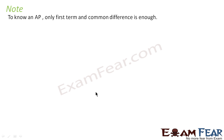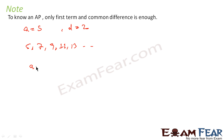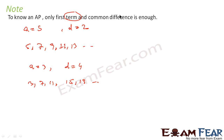An important note: to define an AP, only the first term and common difference are enough. For example, if A = 5 and D = 2, the AP is 5, 7, 9, 11, 13, and so on. If A = 3 and D = 4, the AP is 3, 7, 11, 15, 19, and so on. If you know the first term and common difference, you know the entire AP.